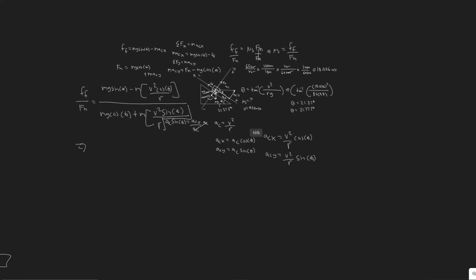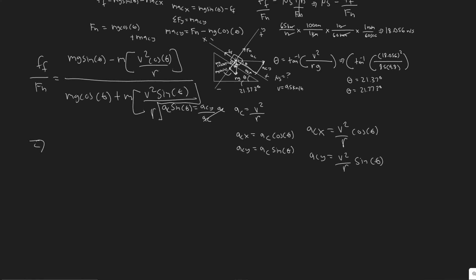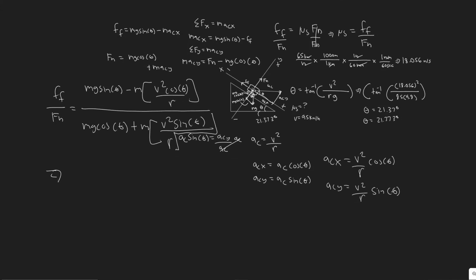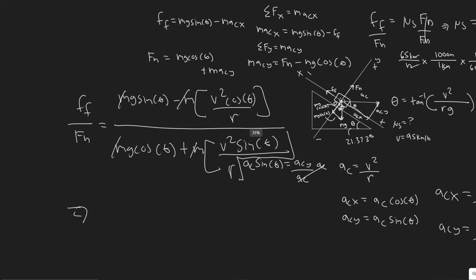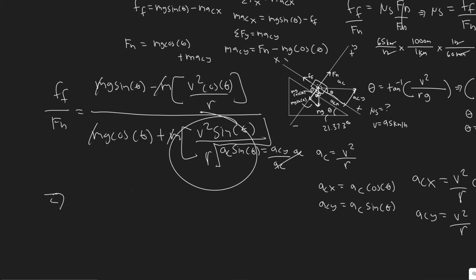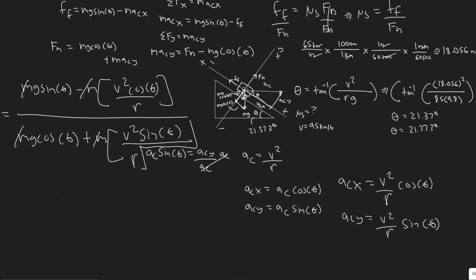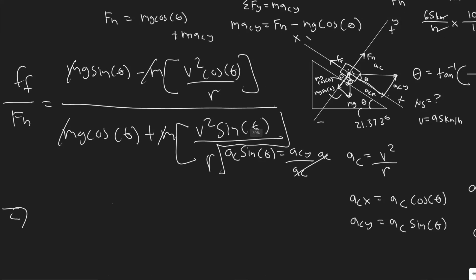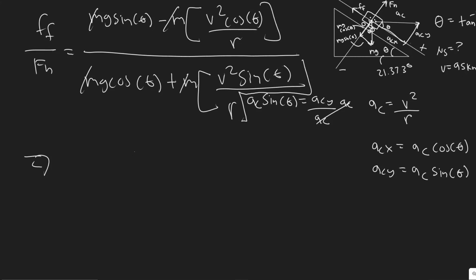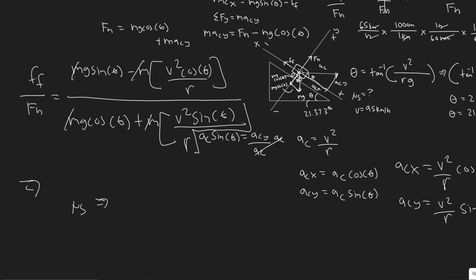Since mass appears in every term, it cancels out. We plug in all values: the velocity is 95 km/h converted to meters per second, theta is 21.37°, and the radius is 85 meters. When you compute this ratio F_friction / F_N, you get μ_s equal to 0.33.